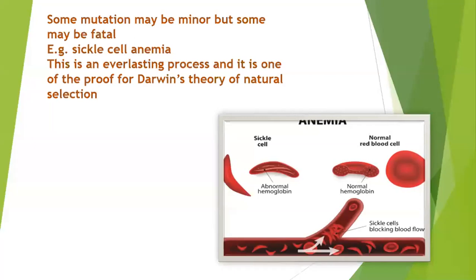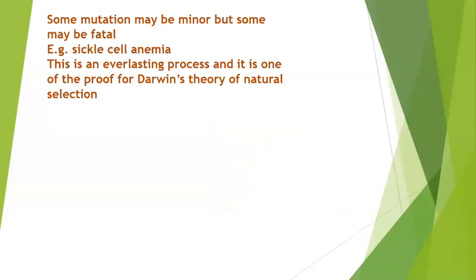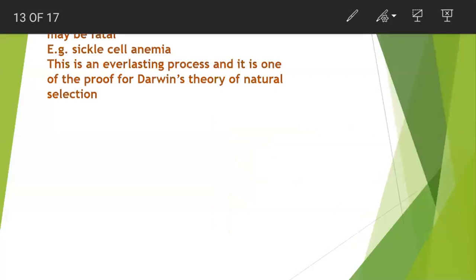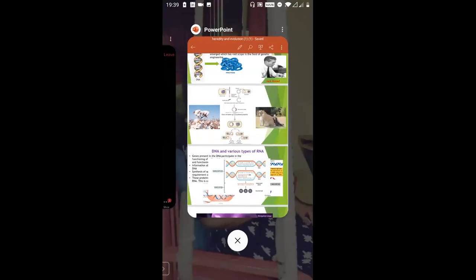One example of a bad mutation is sickle cell anemia — a mutation in which the shape of red blood cells changes from the normal circular shape to a sickle shape, which can also be fatal. Today we covered the important topic of translation. If anyone has any doubts, let's go back to that part.